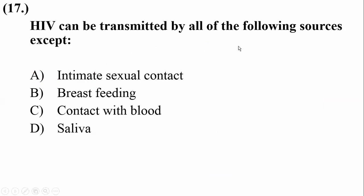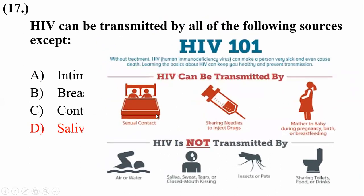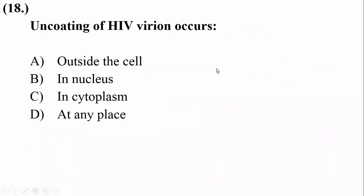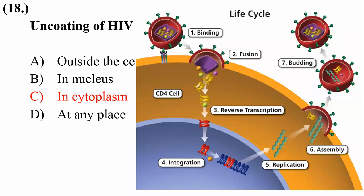HIV can be transmitted by all of the following sources except saliva. Common sources for dispersal of AIDS are blood transfusion and sexual contact. Air, water, saliva, sweat, tears, insects, pets, sharing common food or drinks, or toilets are not responsible for the dispersal of HIV. Uncoating of the HIV virion occurs within the cytoplasm — after attachment, the capsid incorporates into the host cell and uncoats within the cytoplasm.